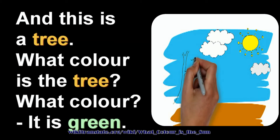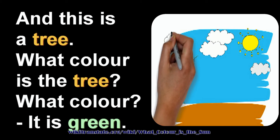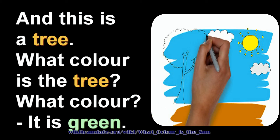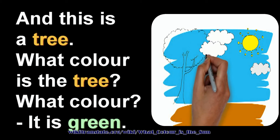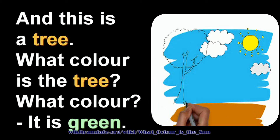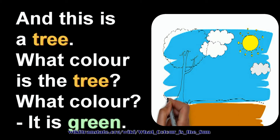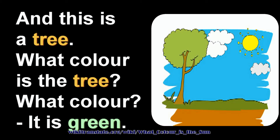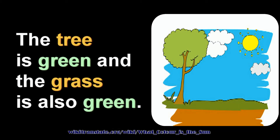And this is a tree. What color is the tree? It is green. The tree is green, and the grass is also green.